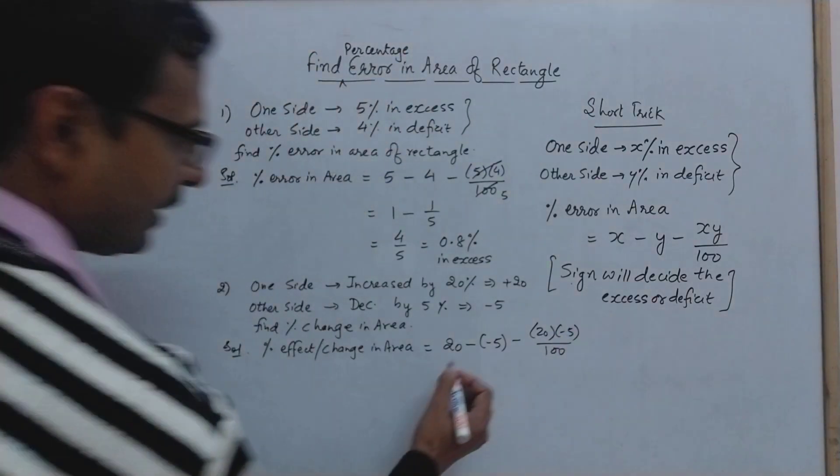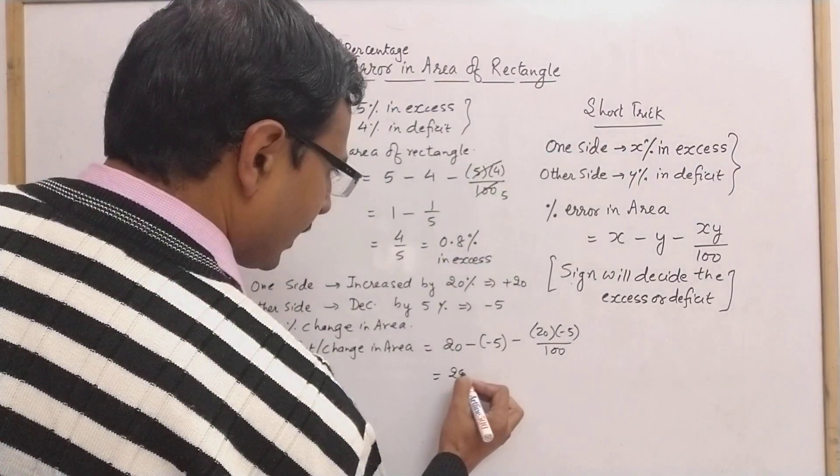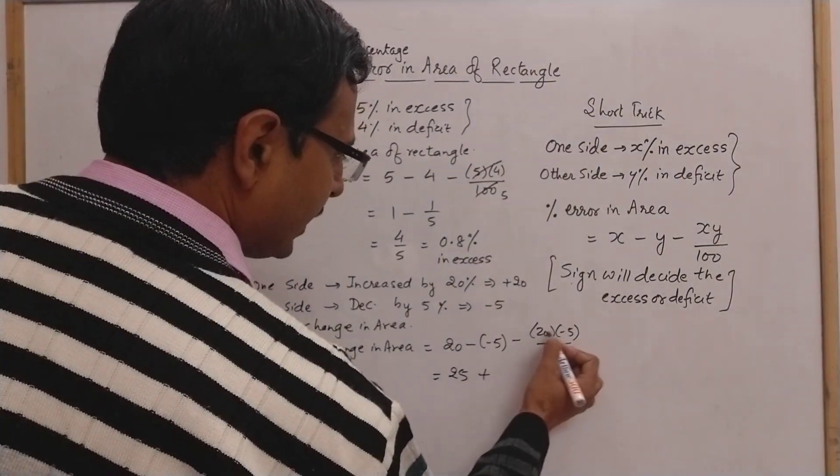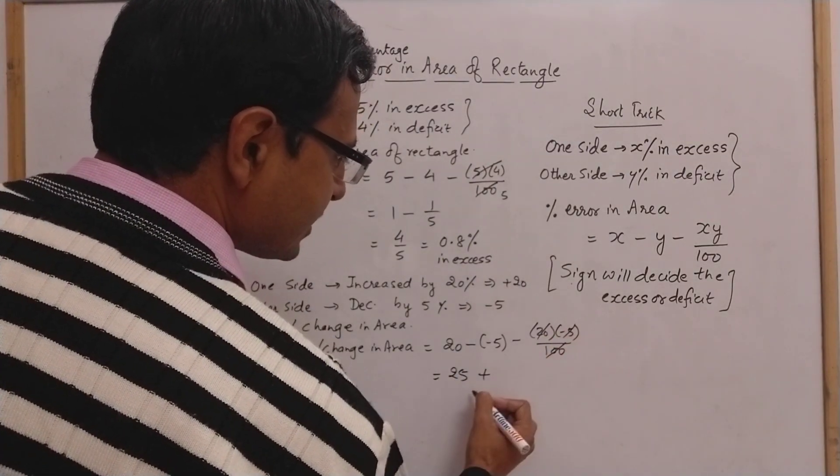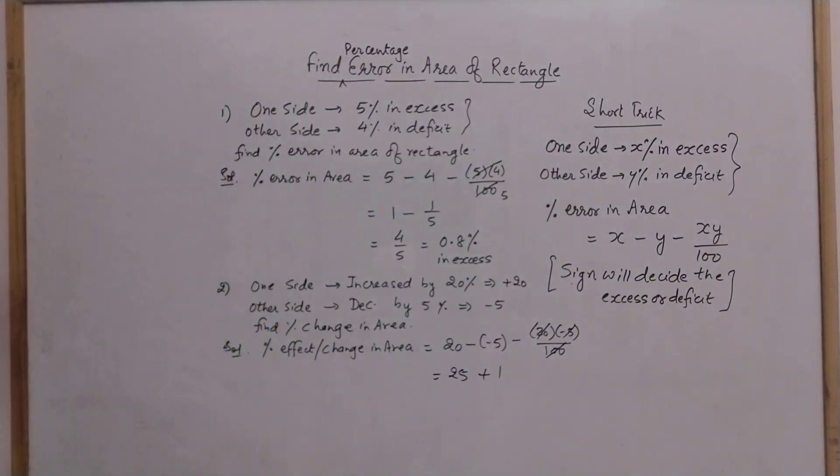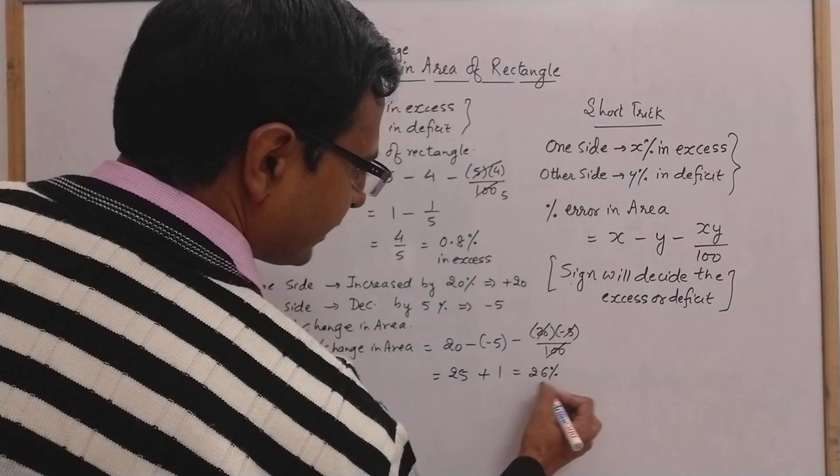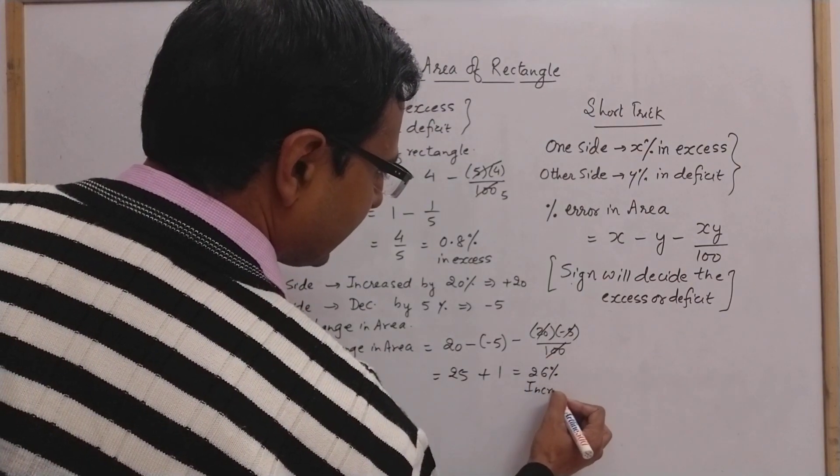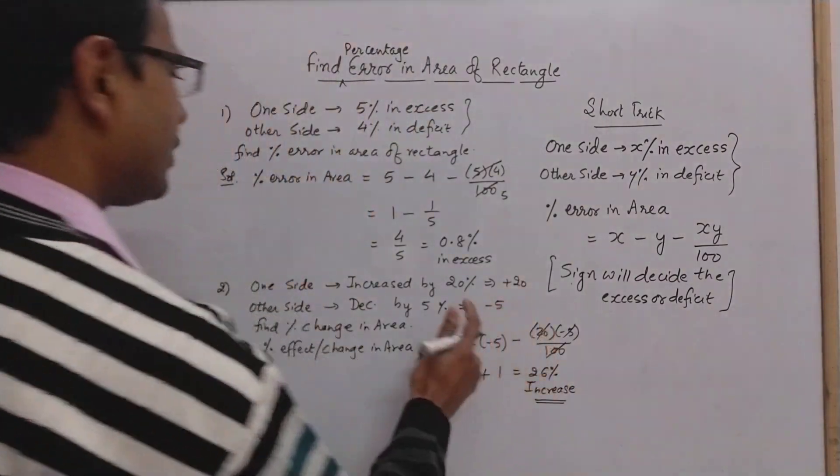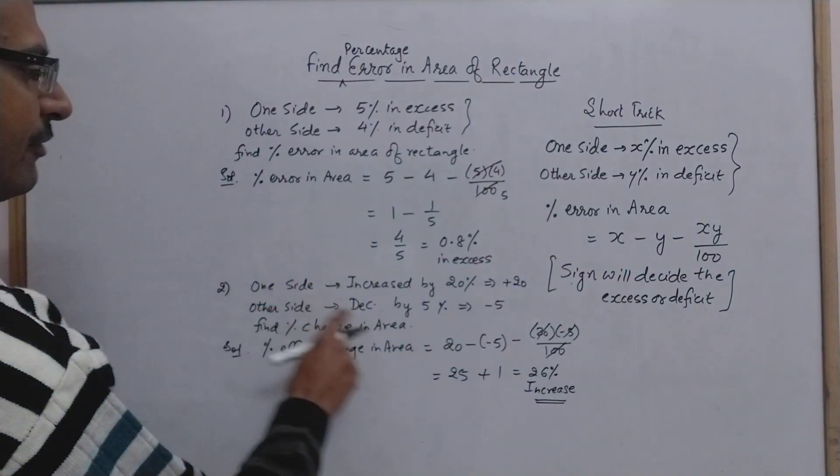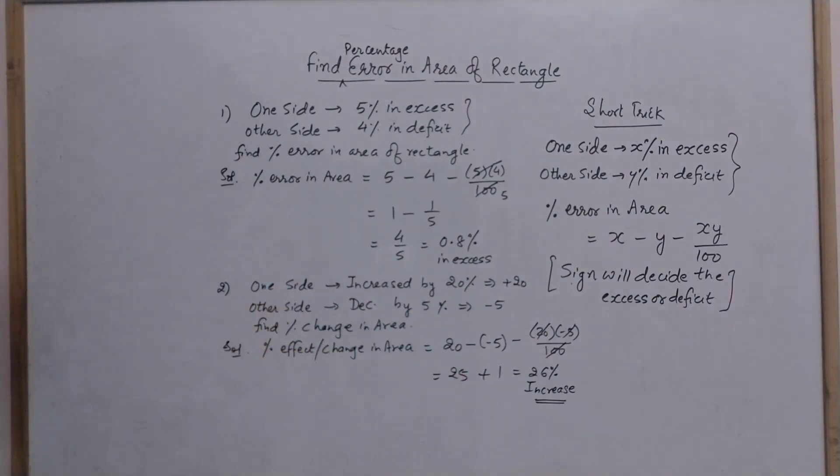Now we can find it directly. This will be 25 minus minus plus, and 20 into 5 is 100. Obviously it cancels with this and gives you 1, so this will be 26 percent. Again, this sign is positive, that means 26 percent increase in area will be there if we consider 20 percent increase in one side and 5 percent decrease in the other side.